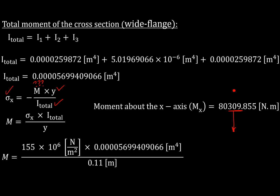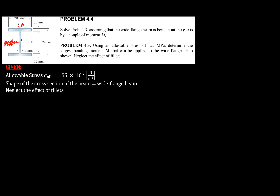This completes problem 4.3. Now in problem 4.4, we have the same beam with the same dimensions, but instead of finding the moment about the x-axis, we need to find the largest bending moment about the y-axis. The same allowable stress applies, and we must identify a new y value, which is now the horizontal distance from the neutral axis to the furthest point.